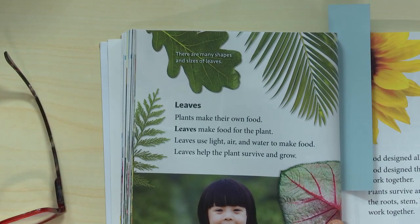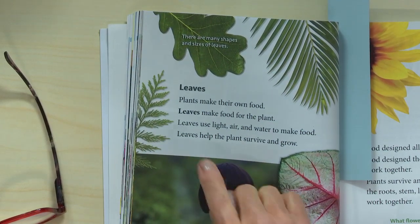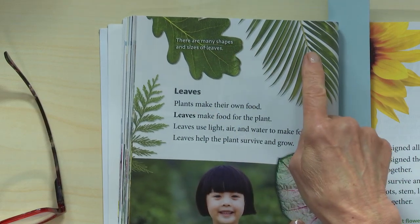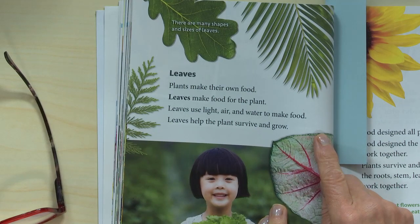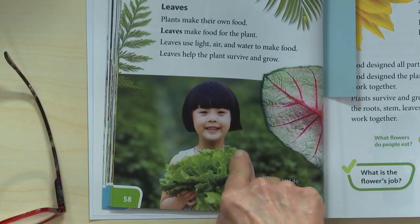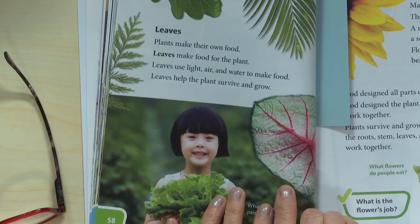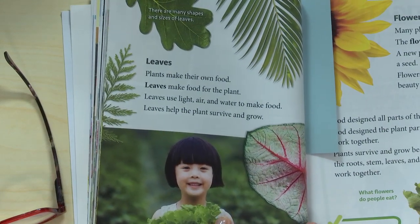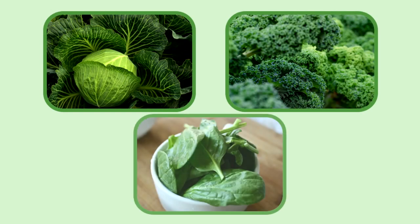Remember that God made plants on the third day of creation. This is something only God could do — God is the engineer who designed all the parts of the plants to work together so that plants can live and grow. On page 58 you see some different kinds of leaves that don't all look the same: cedar, oak, palm, and caladium. What leaves do people eat? They eat lettuce leaves. Other leaves we might eat include cabbage, kale, and spinach.